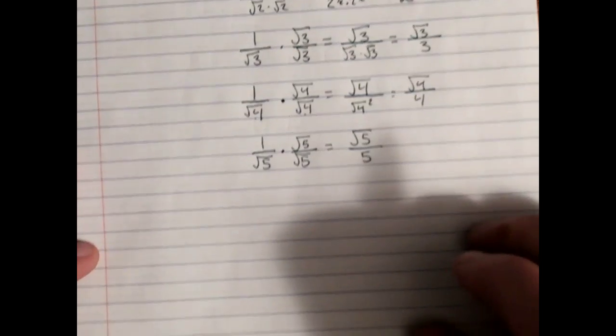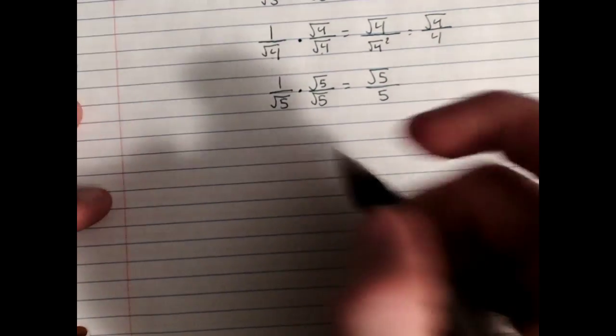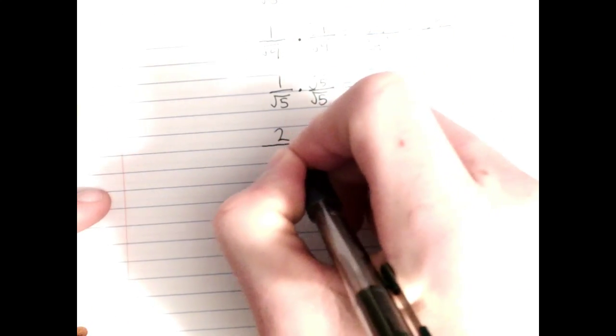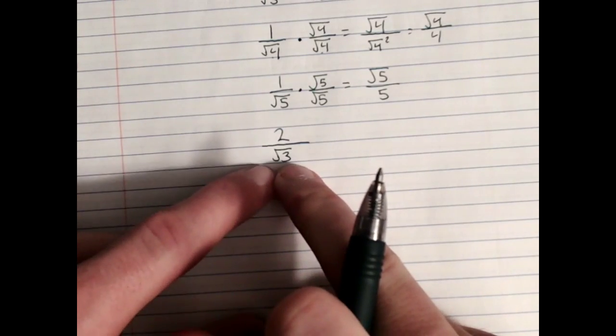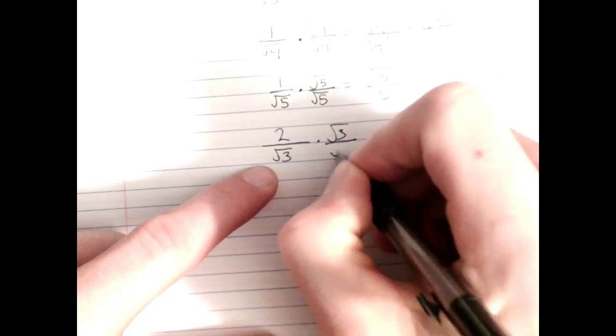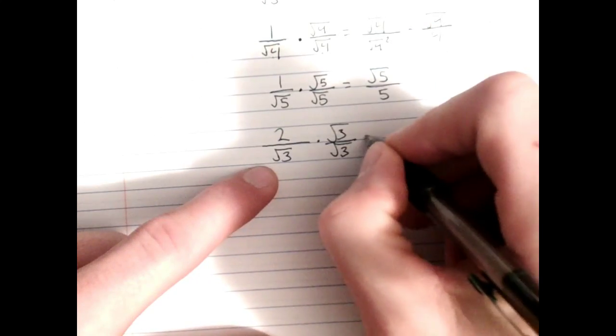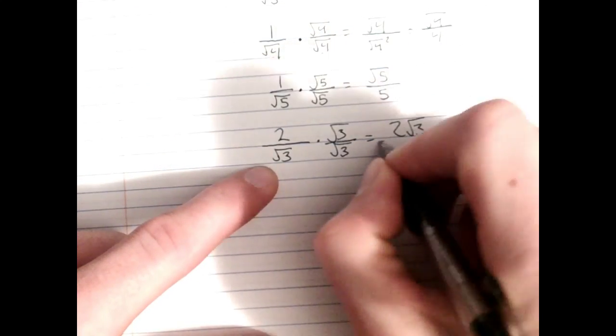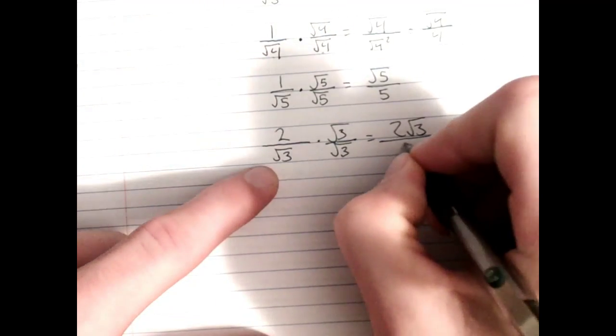So let's increase the complexity slightly. Let's say I've got 2 over root 3. Well, I don't want that root 3 to be in the denominator. So I multiply by root 3 over root 3. 2 times root 3 is 2 root 3. Root 3 times root 3 is just 3.